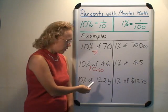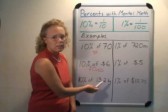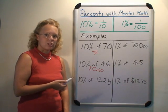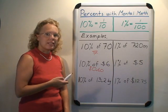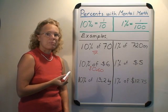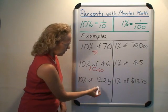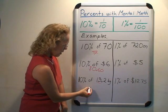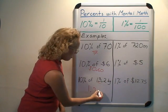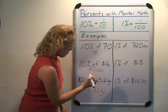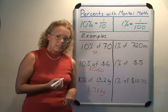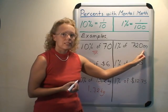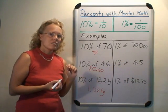10% of 13.2 kilograms: we divide by 10, and there is a shortcut for dividing by 10 — you move the decimal point one step. So you move the decimal point here and it becomes 1.32 kilograms.